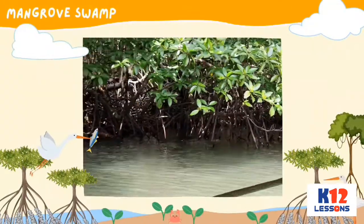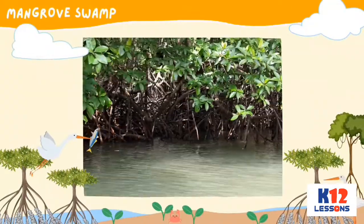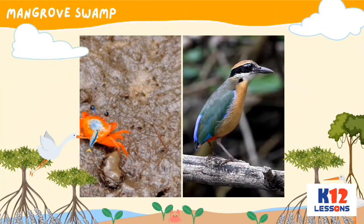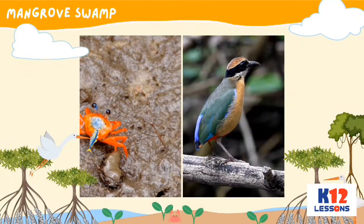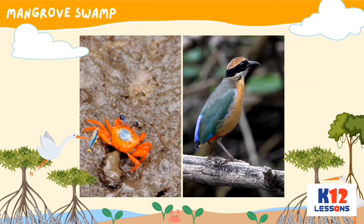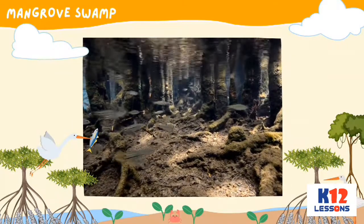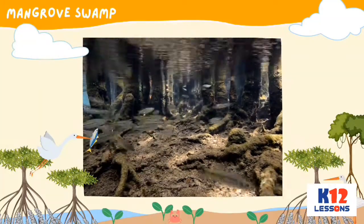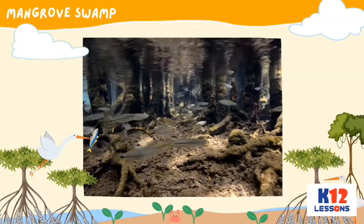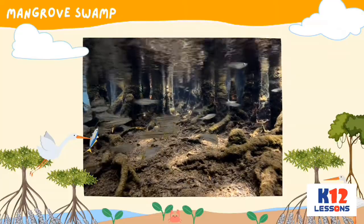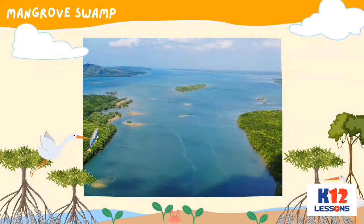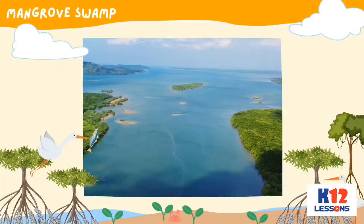Mangrove swamp ecosystem is composed mostly of mangrove plants and animals like crustaceans and migratory birds. It is an important system that allows for the breeding of fishes and survival of other marine animals. It is also a part of the coastal and marine ecosystems.